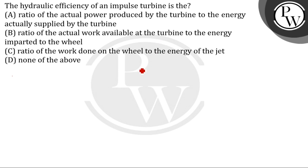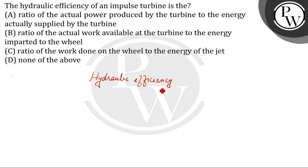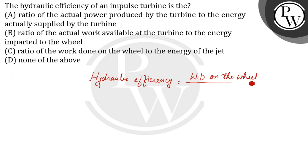There are different types of efficiency of an impulse turbine, and hydraulic efficiency is one of them. By definition, the hydraulic efficiency of an impulse turbine is the ratio of the work done on the wheel to the energy of the jet.